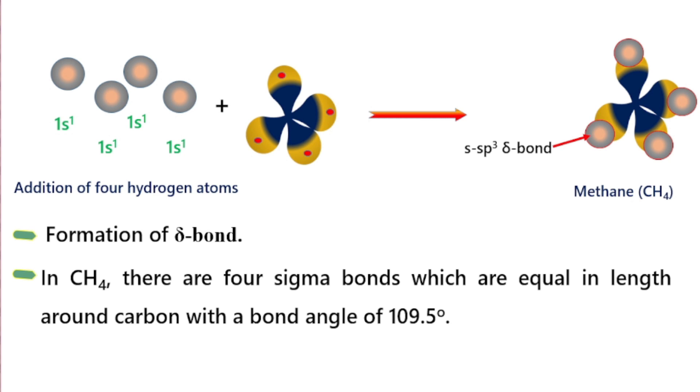In CH4, there are 4 sigma bonds which are equal in length around carbon with a bond angle of 109.5 degrees. We have 4 bonds, the bond lengths are equal, and the bond angle is 109.5 degrees. Overall, methane's shape is tetrahedral. Tetrahedral means 4 corners bearing.